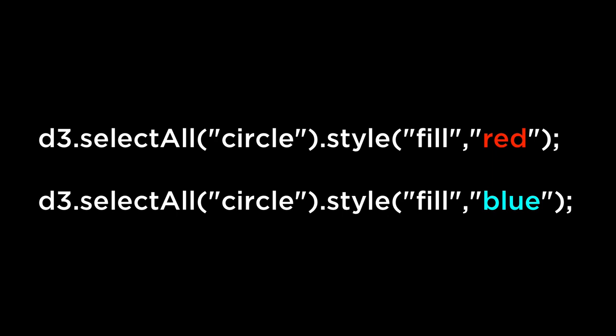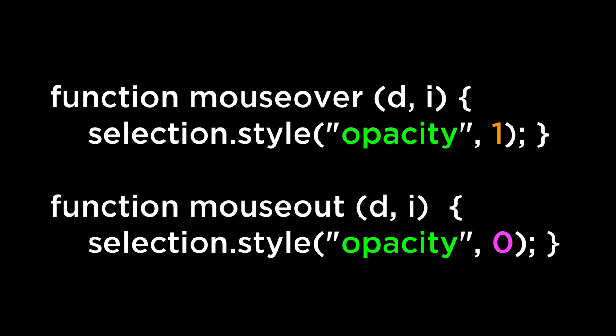Putting it all together: to make an element appear and disappear from the screen, we can use the opacity CSS property. When the opacity property is set to one, the element is visible. As the opacity property goes to zero, the element will become invisible. Using the mouse over and mouse out functions the event listener uses, we can change the style of the element to hide it using the opacity CSS property.